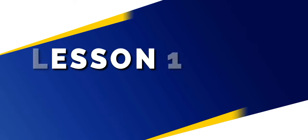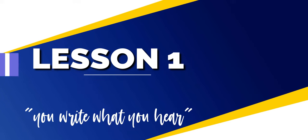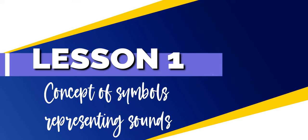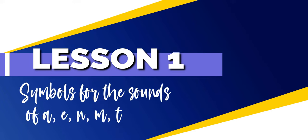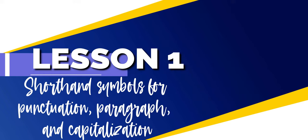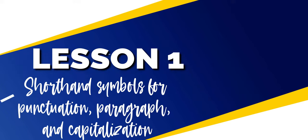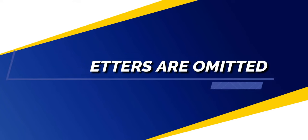In lesson number one, we have the concept of 'you write what you hear' — the concept of symbols representing sounds. We have symbols for the sounds of A, E, N, M, T, and D, as well as shorthand symbols for punctuation, paragraph, and capitalization. In shorthand, silent letters are omitted and other letters may have different sounds.